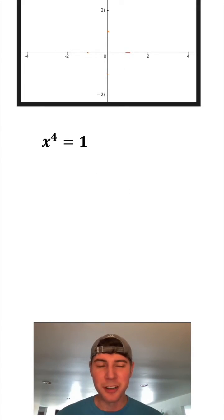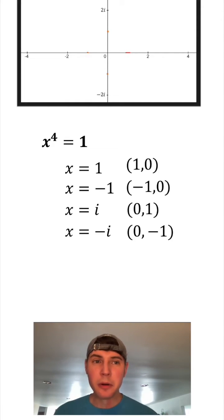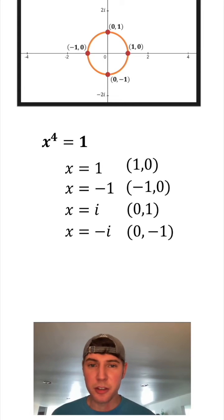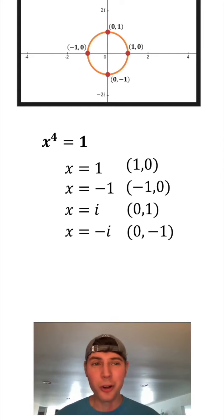And if we look at x to the fourth equals 1, the solutions for this are 1, negative 1, i, and negative i. And if we rewrite each of those as points and plot those points, those cut our circle into four equal parts.